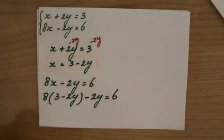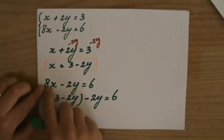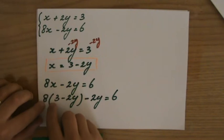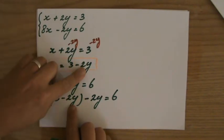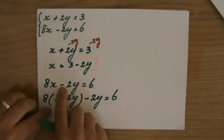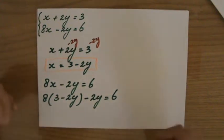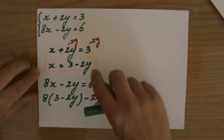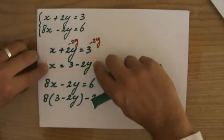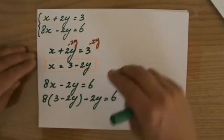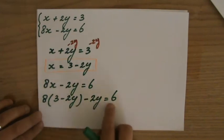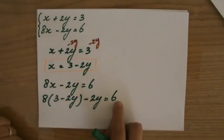So it's going to say 8 times x, so 8 times 3 minus 2y, minus 2y equals 6. Let me check that out. 8 times x, so 8 times 3 minus 2y. Good. And then I continue with the equation. So now I have substituted the value of x of my first equation into the second equation. And as you can see now, I have only one unknown left, which is y. So I can solve it.